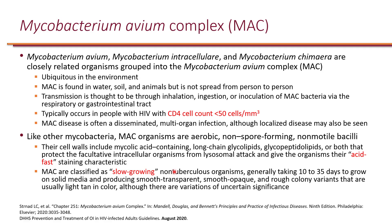Lastly, Mycobacterium avium complex, or MAC, encompasses multiple species of mycobacteria — not Mycobacterium tuberculosis, but slow-growing non-tuberculous mycobacteria. Several that are common in these patients are grouped together and called a complex; avium is the most common, hence the name. MAC is a group of multiple mycobacteria and represents an opportunistic infection that typically occurs in people with HIV with a CD4 count of less than 50 — requiring significant depletion of CD4 cells.